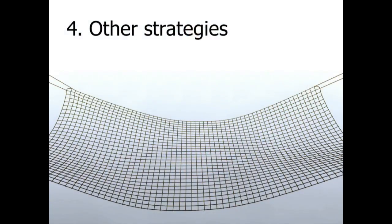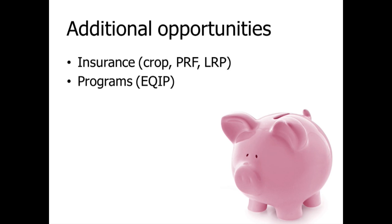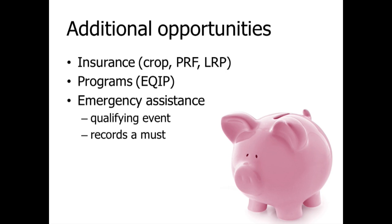Finally, we get into other strategies — what I call the safety net zone. This includes insurance: crop insurance, PRF insurance, or the Livestock Risk Protection program, which acts somewhat like insurance. There are also government programs such as EQIP to help build fences or improve your grazing structure. And there are emergency assistance programs — such as those enacted during drought — but you must have a qualifying event, file within a short period after it, and have records. They're not just going to take your word for it.